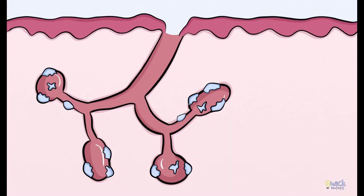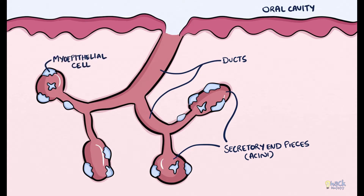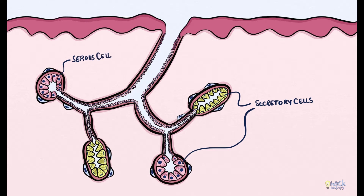Salivary glands consist of secretory end pieces, otherwise called acini, which communicate with the oral cavity through a complex ductal arrangement. This arrangement, along with the help of myoepithelial cells, helps salivary glands secrete saliva. Secretory end pieces house the secretory cells of the salivary glands, which are of two types: serous and mucous cells. Secretory cells are also called acinar cells since they are housed in acini or secretory end pieces.